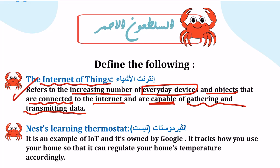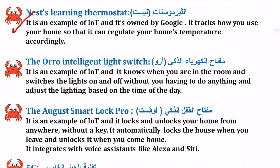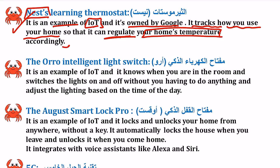التعريف الثاني هو NEST Learning Thermostat، الترموستات الذكي. هو مثال على إنترنت الأشياء وتملكه شركة جوجل. هو يتعقب كيف أنت تستخدم بيتك وبعدين يعمل تنظيم لدرجة حرارة المنزل وفقاً لاستخداماتك أو وفقاً للقراءات التي قرأها.